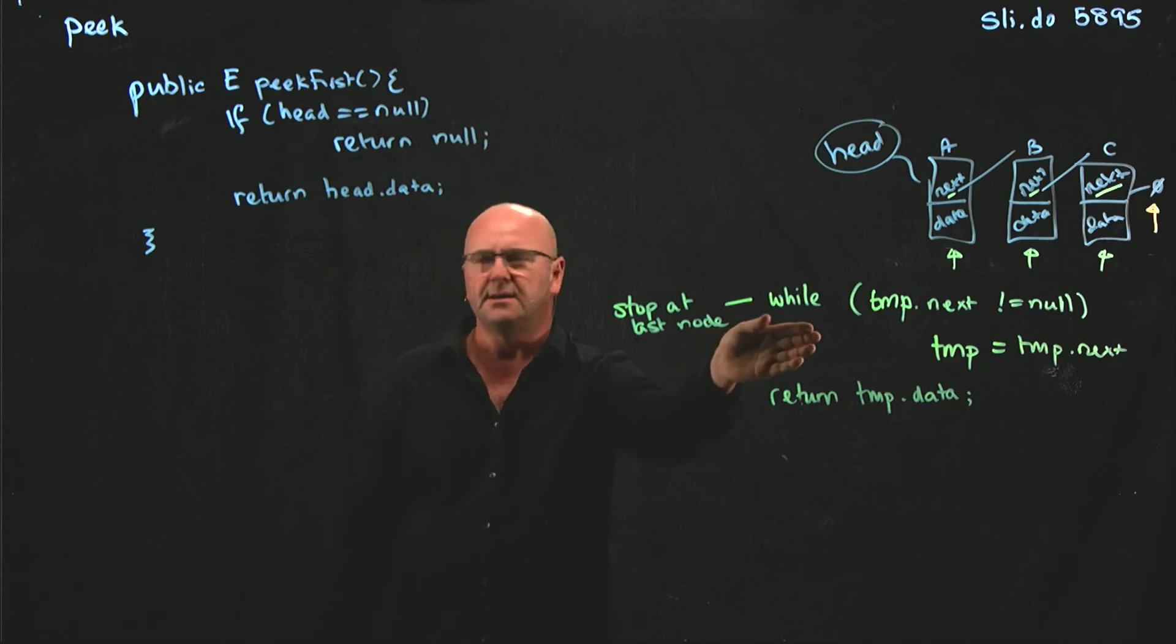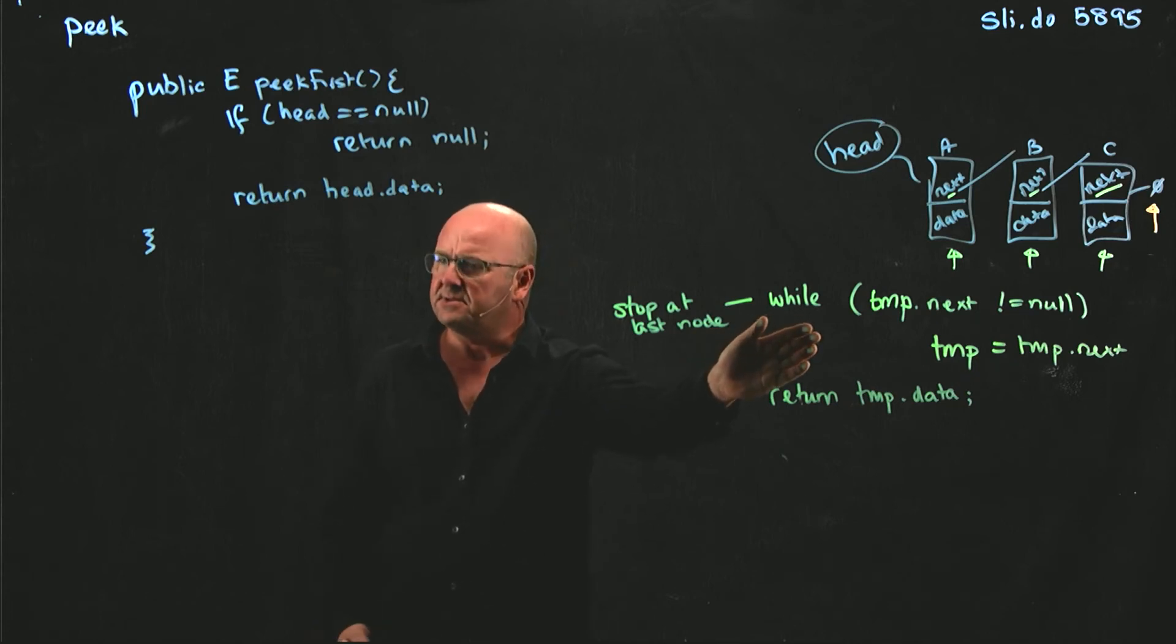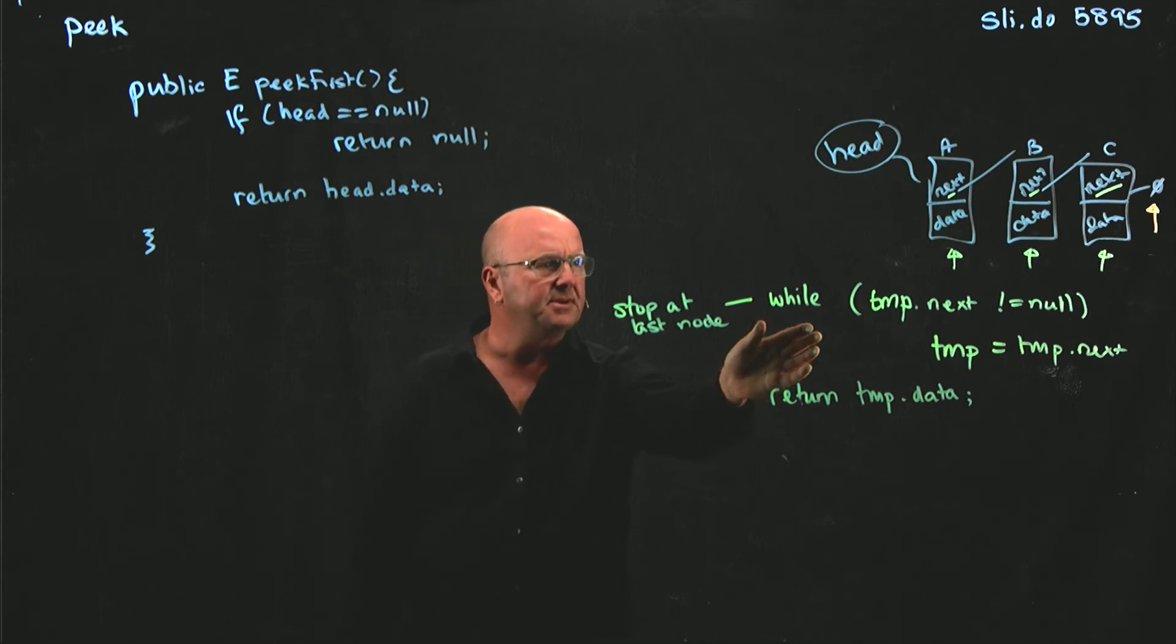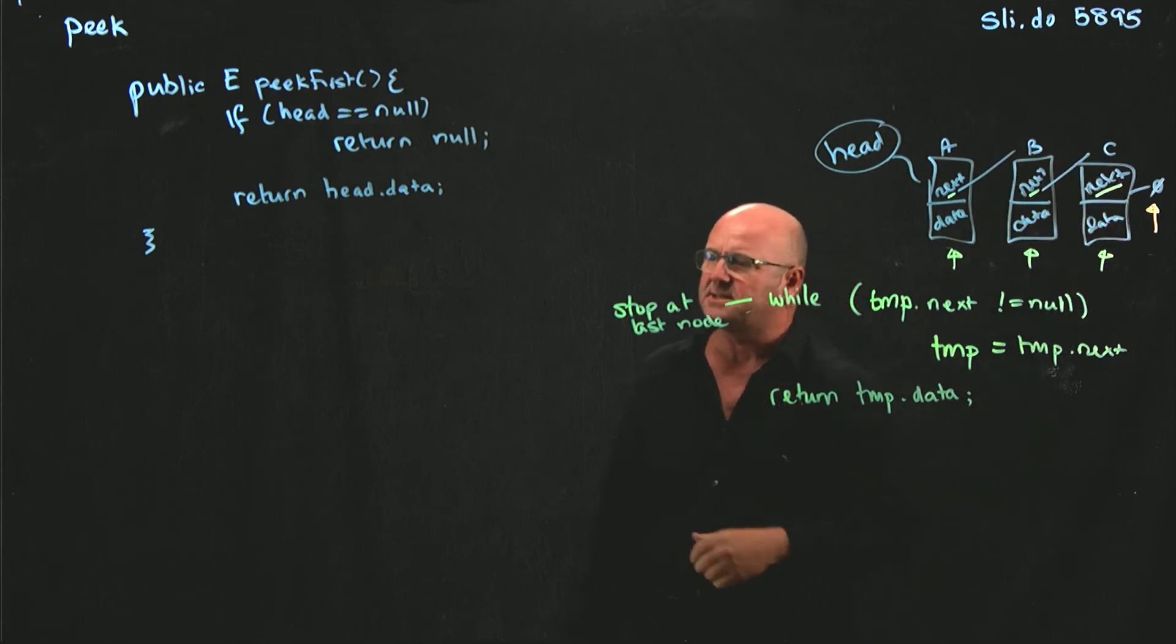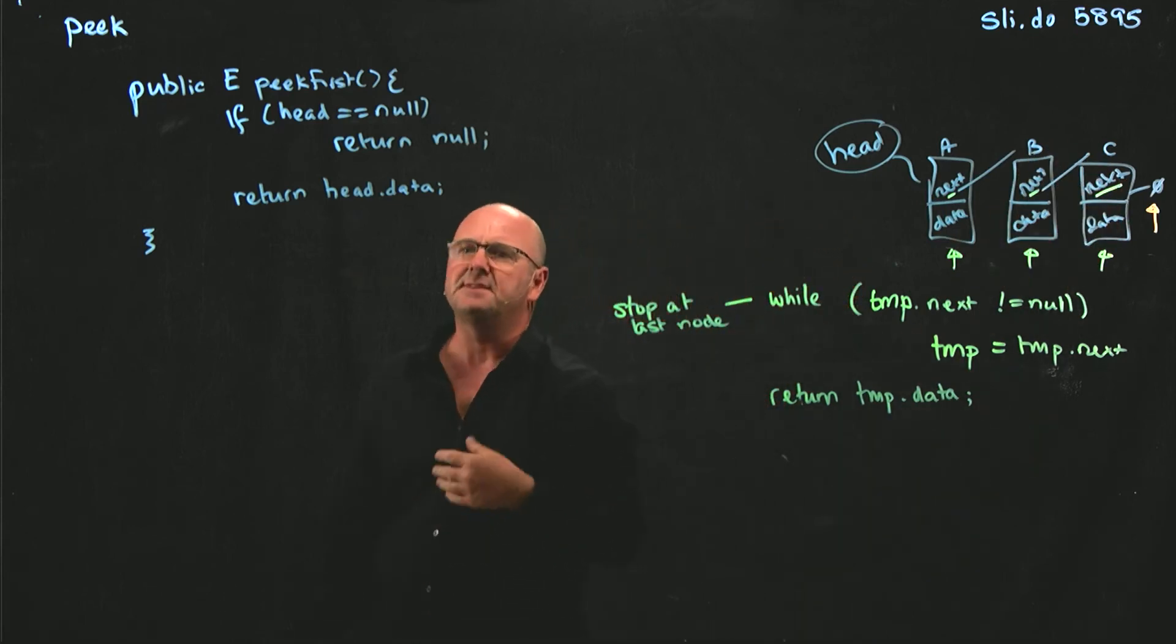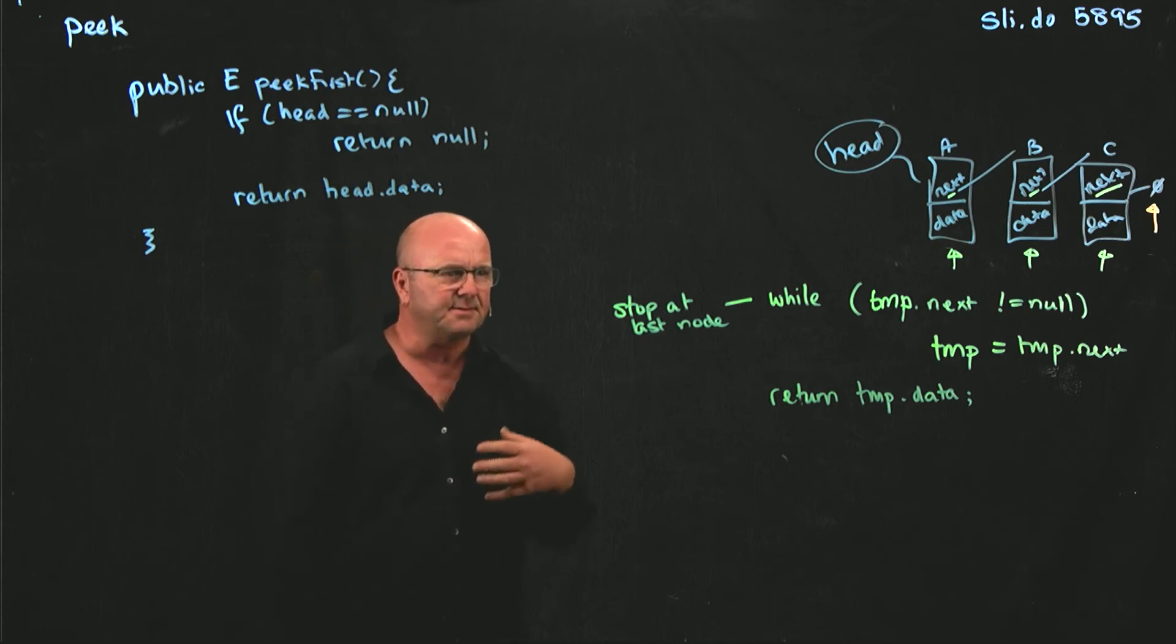What's the complexity of doing peak last like this? It's big O of N, right? Because we're starting at the beginning, and we're going to visit every node through our list. If our node has 10 things, we have to visit 10 things. If our node has 1,000 things, we have to go through 1,000 things. If our node has 1,000,000 things, we have to go through all 1,000,000 of them.